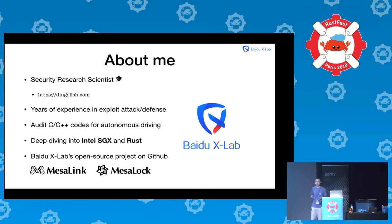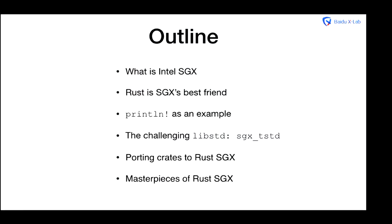This is my outline for today. This is the first time I've talked to the Rust community instead of security folks, so I will spend a little more time on Intel SGX and discuss why Rust is SGX's best friend. Next, I'll use the simplest sample, print line, as an example to show how to support it in SGX. Then the most challenging part: porting the entire libSTD to SGX, named as sgx_tstd.